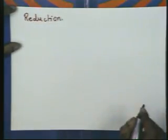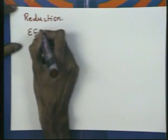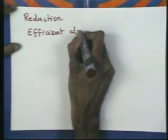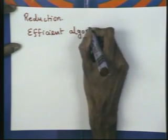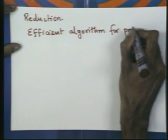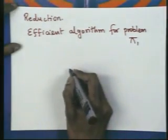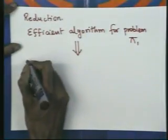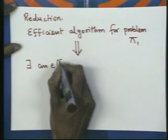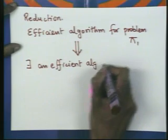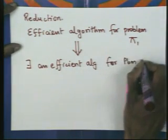Last time we looked at the concept of reduction. Let me quickly review what we mean by reduction. Reduction means: given an efficient algorithm for problem π₁, using this we design an efficient algorithm for a different problem. We essentially show that this implies there exists an efficient algorithm for problem π₂.